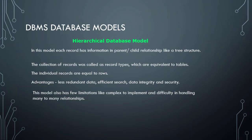The collection of records is called record types, which are equivalent to tables. In a table, each row gives us a complete record of an individual person or product. The advantages of the hierarchical database model are: less redundancy, efficient searching, data integrity, and security.